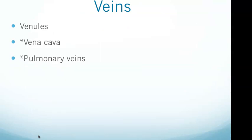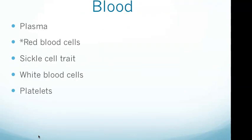Blood is an essential bodily fluid that transports oxygen and nutrients to the tissues and removes waste products including carbon dioxide and ammonia. The four main components of human blood are red blood cells, white blood cells, platelets, and plasma.